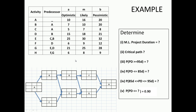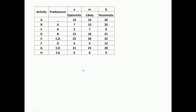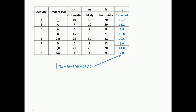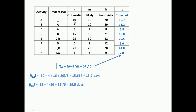What we have done here is put up the network. The activity predecessor relationship is used to build the network. We then go on to the next step in PERT, which is to calculate the expected value. Using the formula, I have calculated the values in this column. For example, for activity A: 10 plus 4 times 16 plus 20, divided by 6, gives me 15.7, which is the expected value. Similarly, for activity E: 25 plus 4 times 30 plus 32 gives you 29.5. We calculate the expected duration similarly for all other activities.